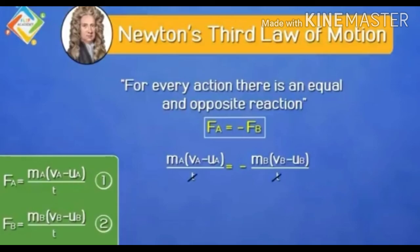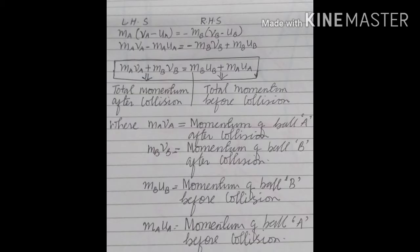Expanding both sides: MA·VA − MA·UA = −MB·VB + MB·UB. Now we rearrange by interchanging terms — changing signs as we move terms across the equals sign.